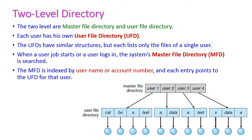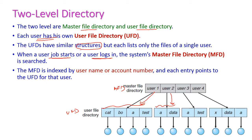The two level directory has two levels: the Master File Directory (MFD) and the User File Directory (UFD). Each user has their own user file directory, and the directory structure is similar across users but belongs only to that particular user. When a user's job starts, the user logs in and the system searches the master file directory to find the corresponding user, who can then access only their own directory.